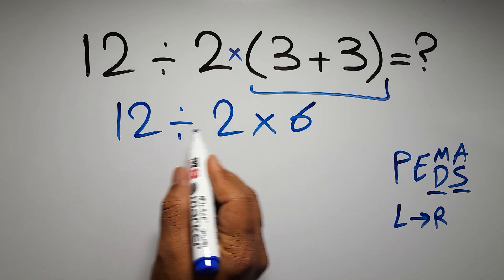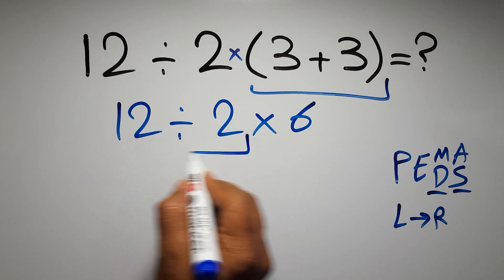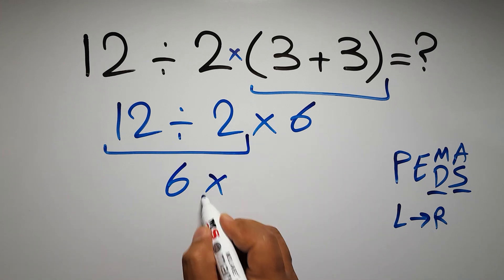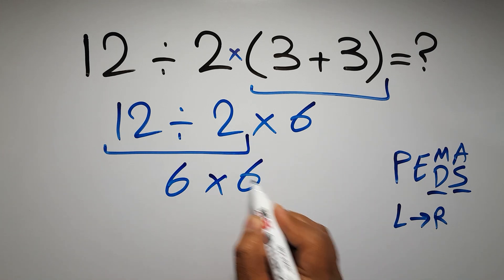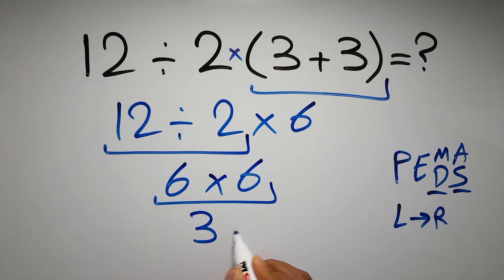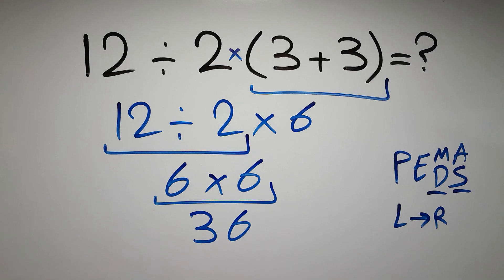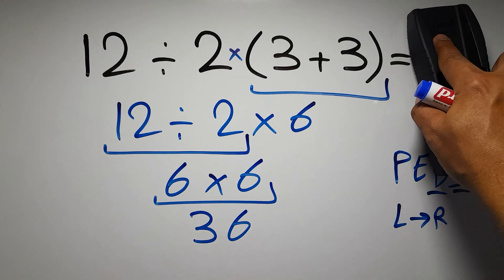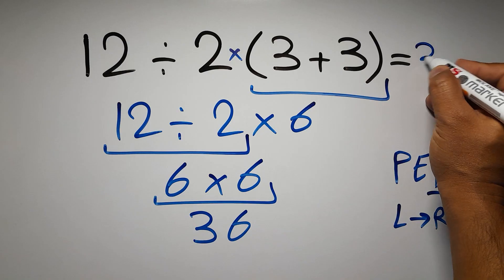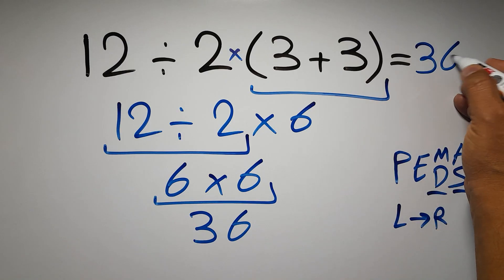12 divided by 2 gives us 6, so 6 times 6, which equals 36. And this is our final answer to this problem — the correct answer is 36.